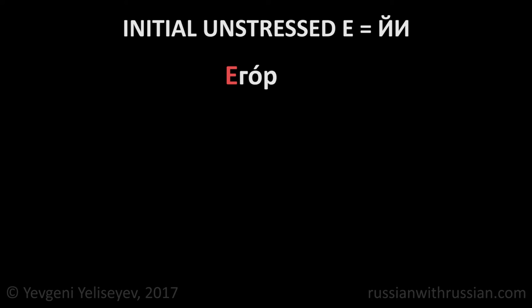And now let's talk about unstressed Е. We will start from examination of the unstressed Е that is not located at the end of the word. At the beginning of the word, unstressed Е is pronounced as Е: Егор, Европа, Еда, Её.